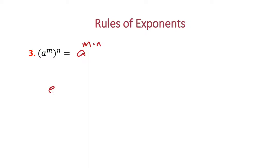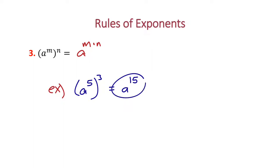For example, a to the 5th to the 3rd power equals a to the 15th, because 5 times 3 is 15. The reason this occurs is we have 3 copies of a to the 5th, and since we're multiplying, we add the exponents: 5 plus 5 plus 5 equals 15. This is actually how you prove the rule.